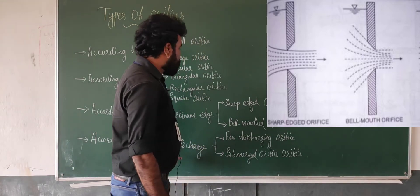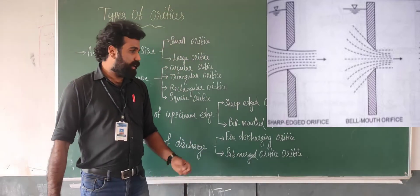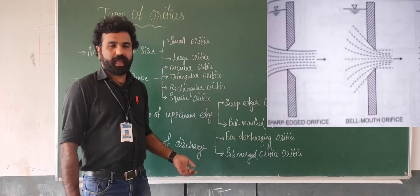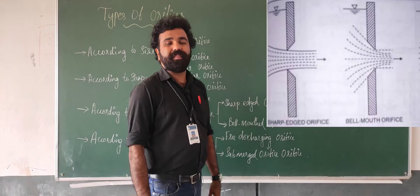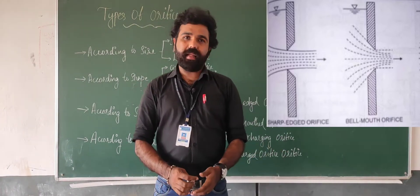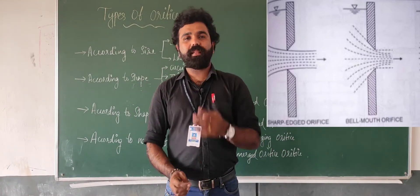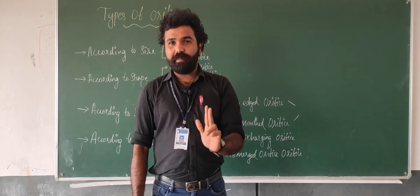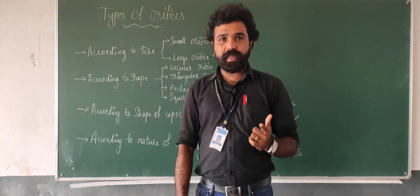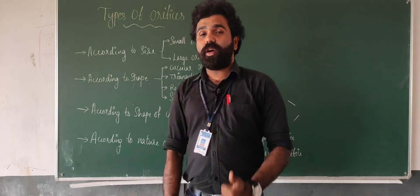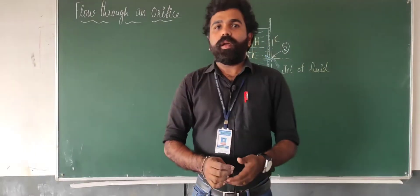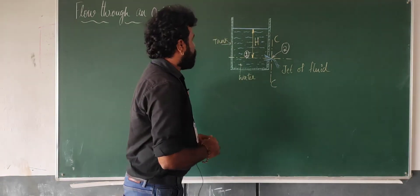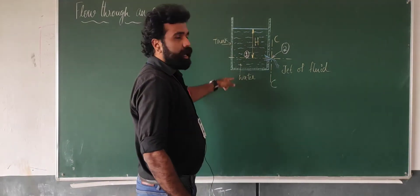According to the nature of discharge, we have free discharge and submerged discharge. So this is the classification of the orifice. We classify according to the size, shape, shape of upstream edge, and nature of discharge. Next topic is flow through an orifice.